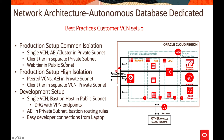The client tier is in a separate private subnet, and web tier applications are in a public subnet as per requirements. You can also have peered VCNs with Autonomous Dedicated in a private subnet, and client tiers in a separate VCN or private subnet, to provide maximum isolation.